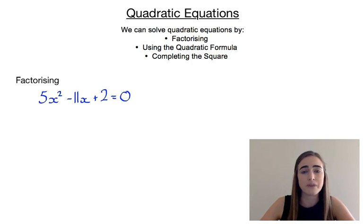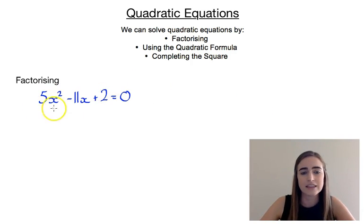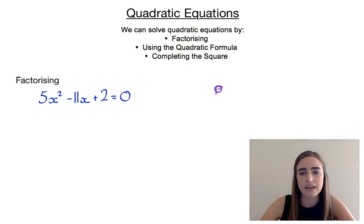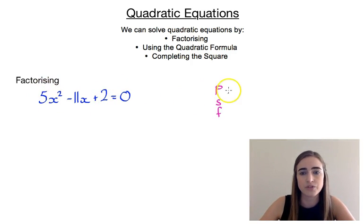We'll start off with solving one by factorising. Our example is 5x squared minus 11x plus 2 is equal to 0. We want to factorise the left-hand side of this equation. There are a couple of different ways to do it, but if we use the PSF method, we would want a product of — remember we've got to do the 5 times 2 — so a product of positive 10.